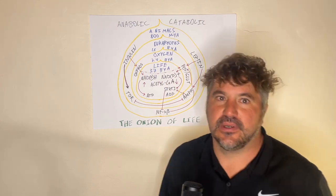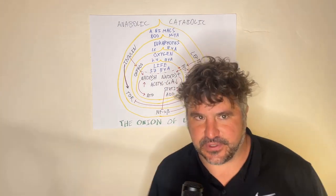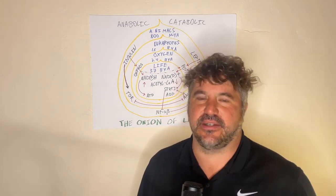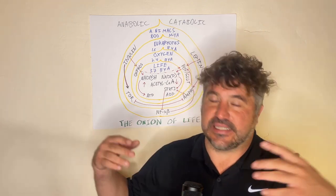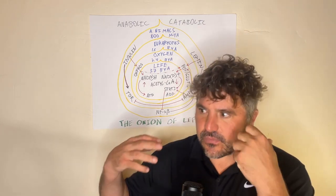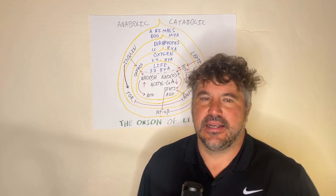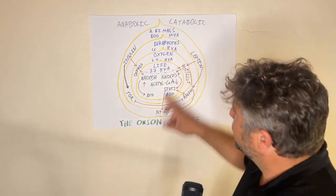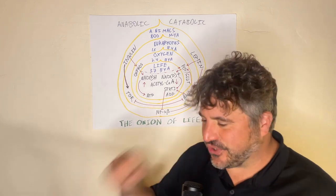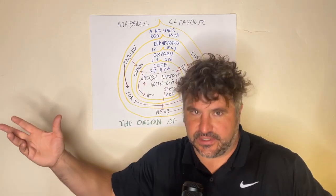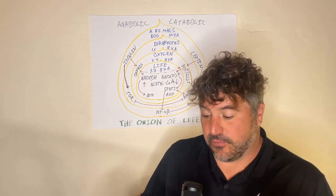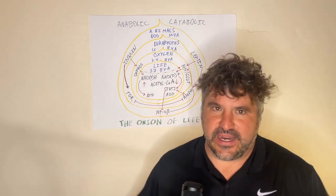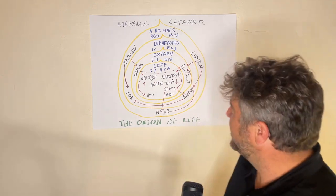Then 2.4 billion years ago, suddenly oxygen came into the atmosphere. That happened because these little bacteria became cyanobacteria — they got a lot of the key enzymes that eventually became plant chloroplasts, and suddenly they got electron transport chains. They could take CO2 out of the air, turn it into acetyl-CoA, and bubble off oxygen, O2. When oxygen went into the environment, it created an absolute catastrophe for most life on Earth because oxygen causes rust, it causes fire, it causes all kinds of problems. It's very reactive and kind of dangerous.